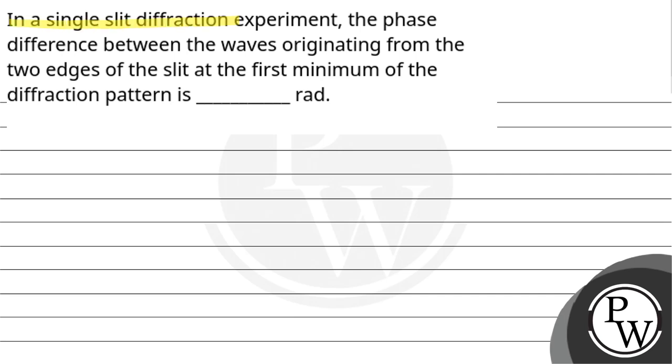Let's read the question. In a single slit diffraction experiment, the phase difference between the waves originating from the two edges of the slit at the first minimum of the diffraction pattern is blank radians. So here our key concept is...